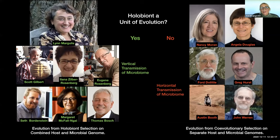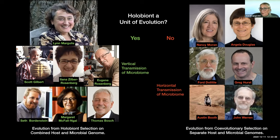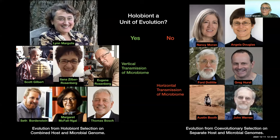Critics of the holobiont as a unit of evolution have stressed that in fact most microbes move horizontally through widespread passage in the environment. For example, with corals, most zooxanthellae are picked up from the surrounding seawater, and there are very few taxa in which there's vertical transmission of zooxanthellae. The absence of vertical transmission led critics to suppose that you can't have a holobiont serving as a unit of evolution because there's no inheritance.